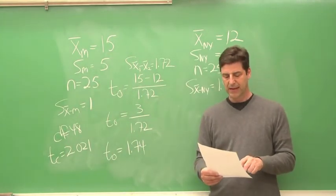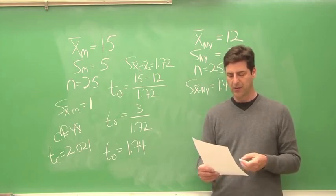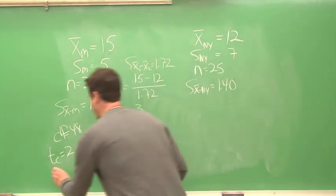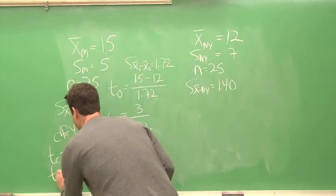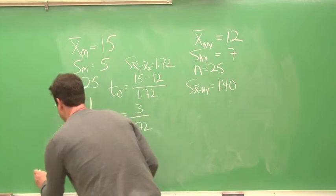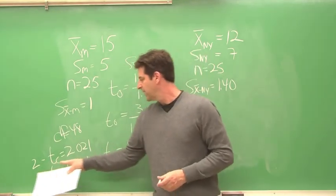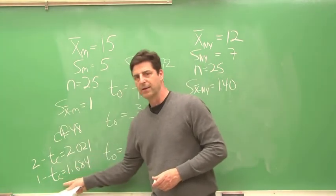For a one-tail test with 40 degrees of freedom and alpha level of 0.05, we get a critical T value of 1.684. Two-tailed, one-tailed.